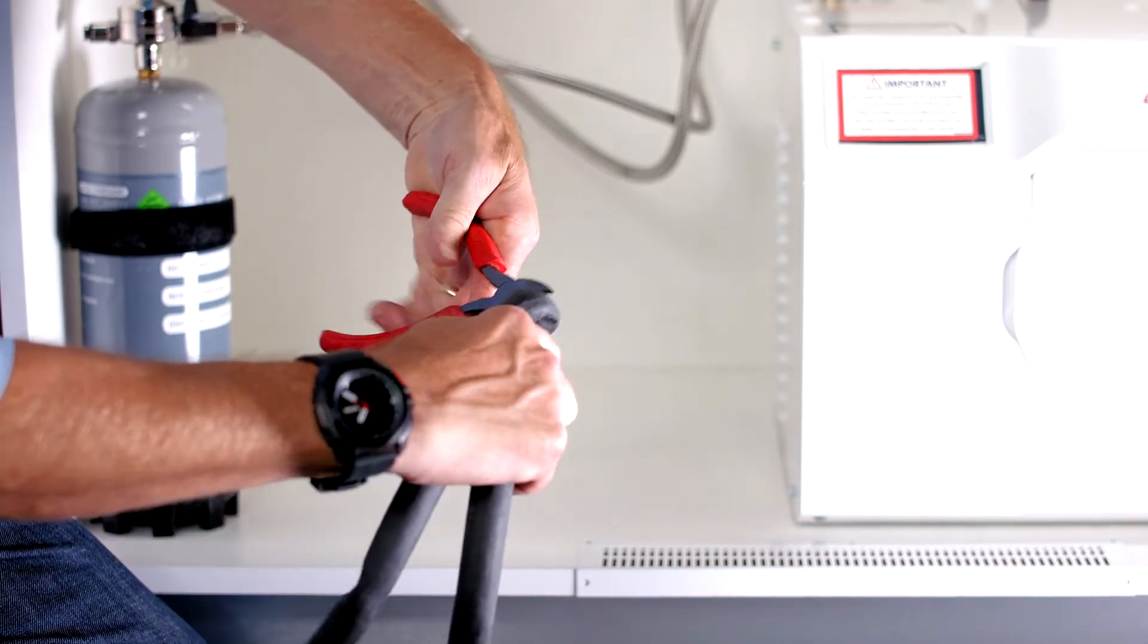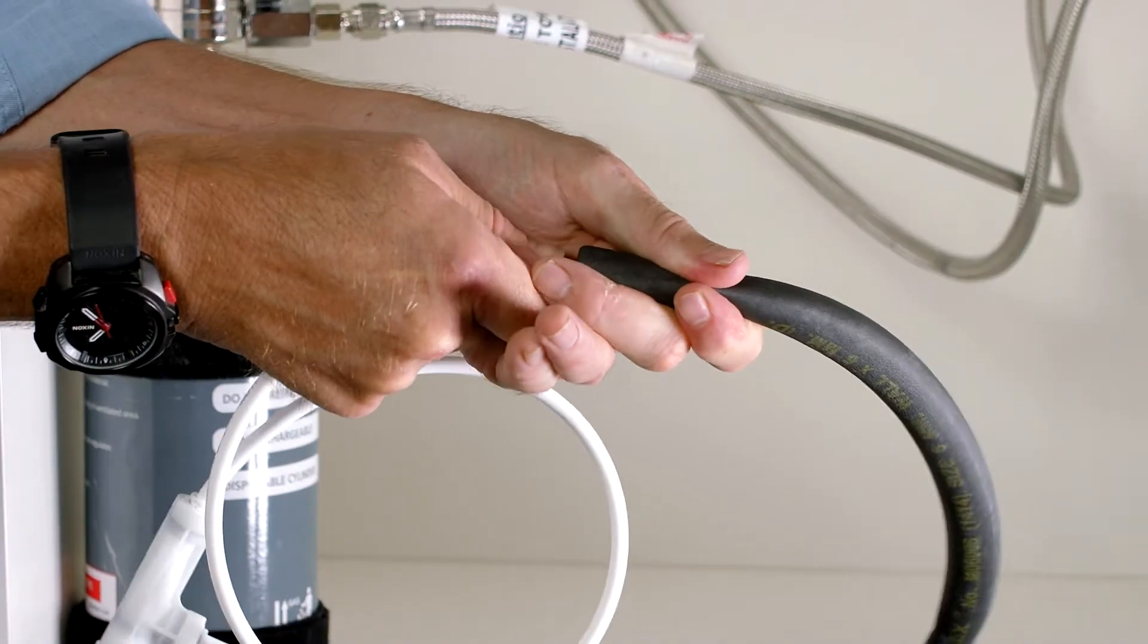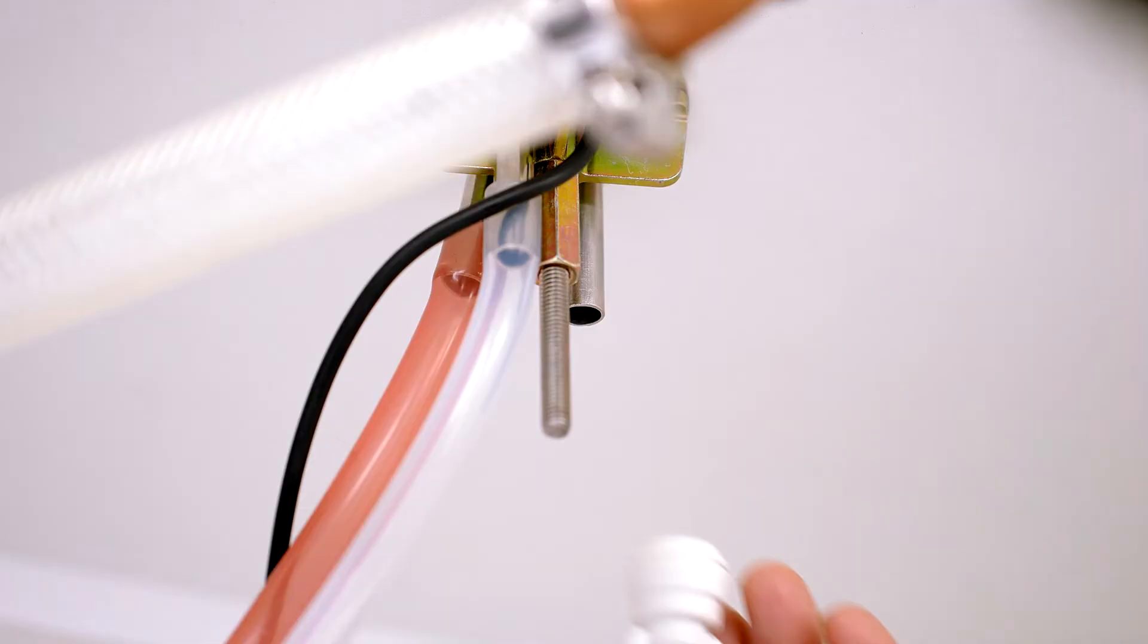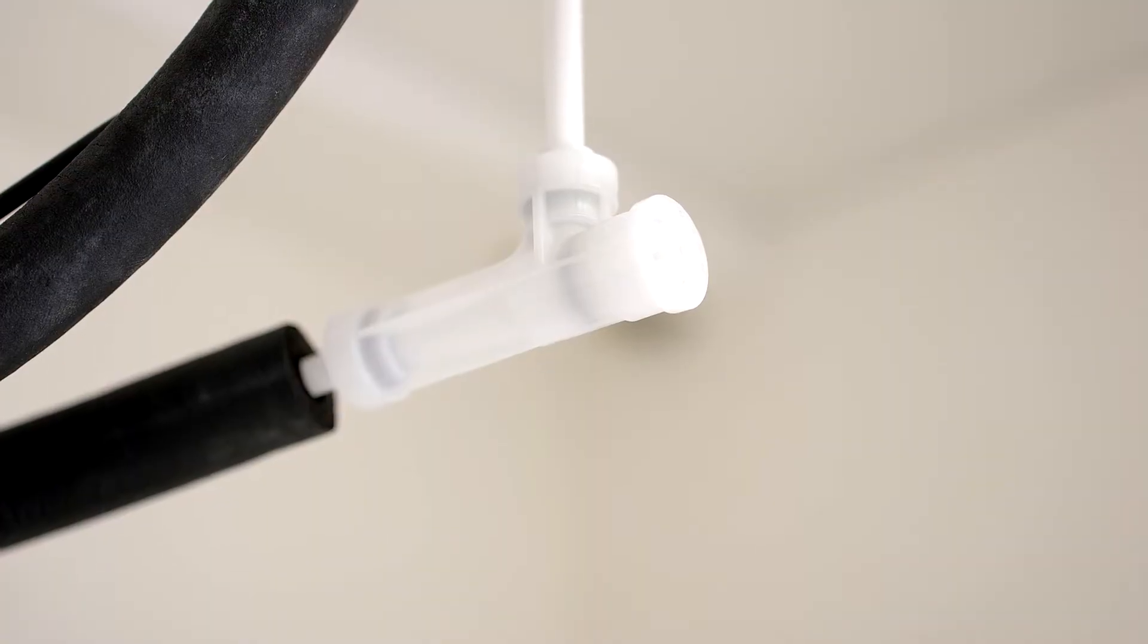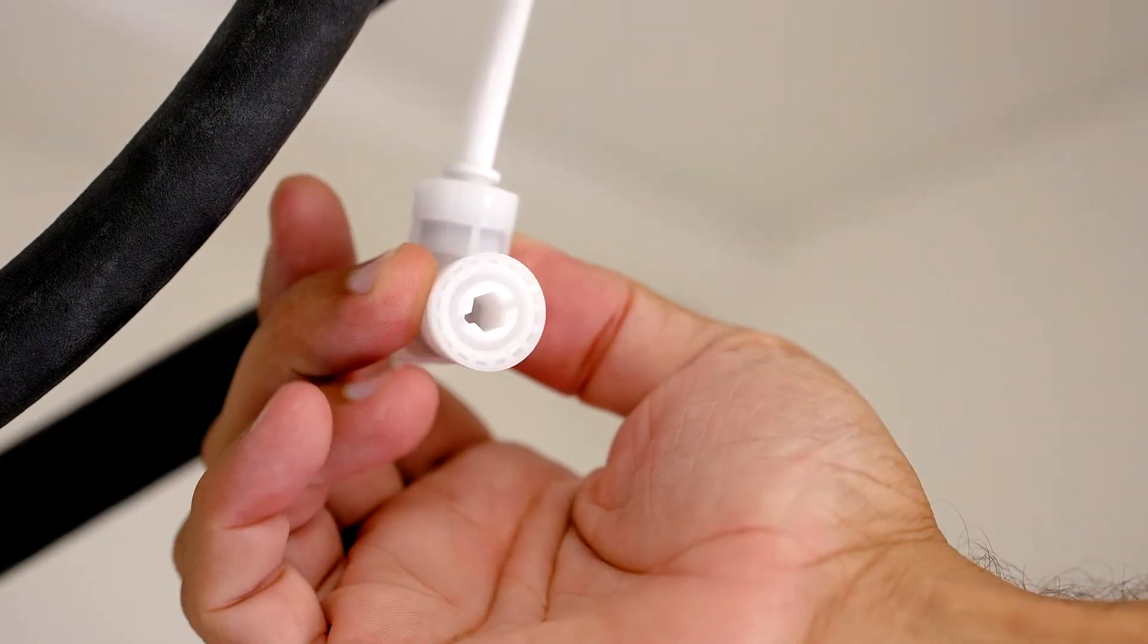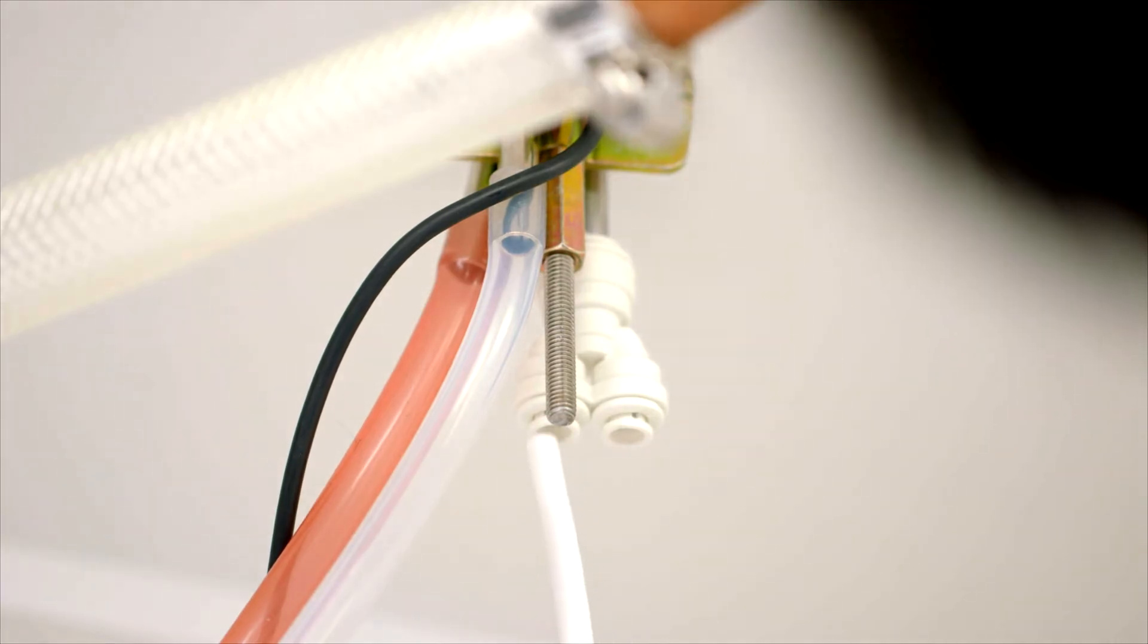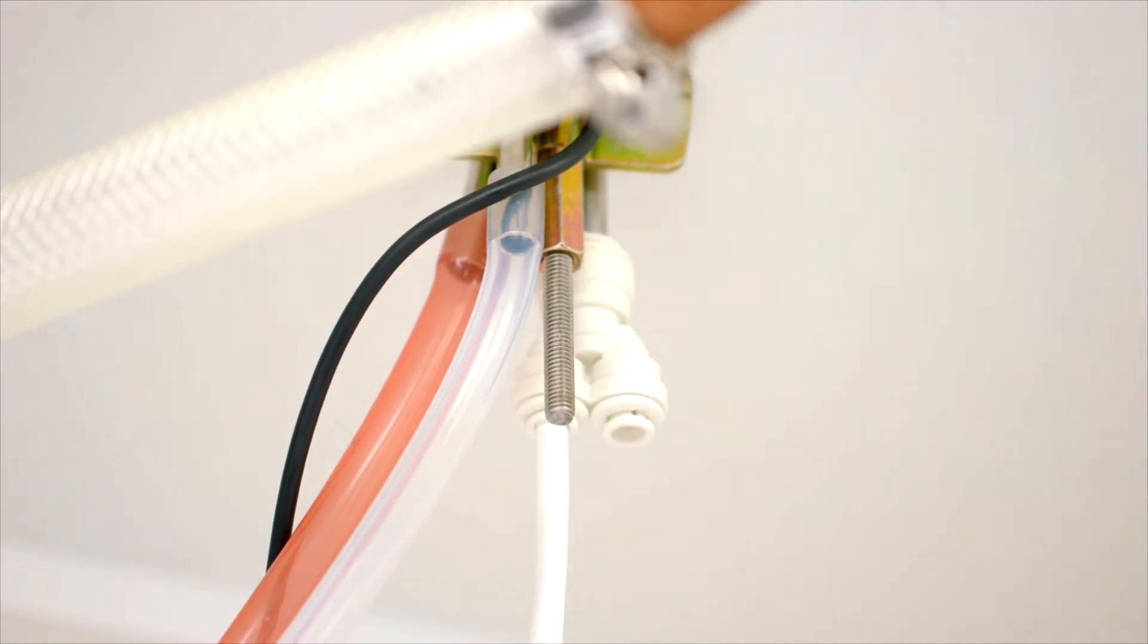Then feed the blue and white John Guest hoses through the insulation. Next fit the supplied Y connector to the spare pipe on the bottom of the tap. The carbonation valve is used to adjust the flow of the sparkling water from the tap. This adjustment needs to be made with either an Allen key or a flat blade screwdriver. This adjustment needs to be made after the commissioning stage of the G5 HydraTap. Fit the carbonation valve to the bottom of the Y piece.